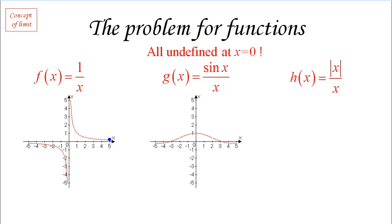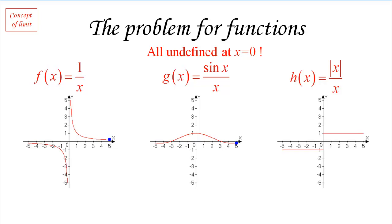Now let's look at the second function, sine x over x. As we try to go through x equals 0, it looks like not much is happening — there appears to be no problem at x equals 0, and yet we know we can't compute it there. For the third example, from the left-hand side it goes nicely and then jumps to the other side. So three functions, all with the same problem at zero, but three very different behaviors. With limits we're going to figure out exactly what's going on.